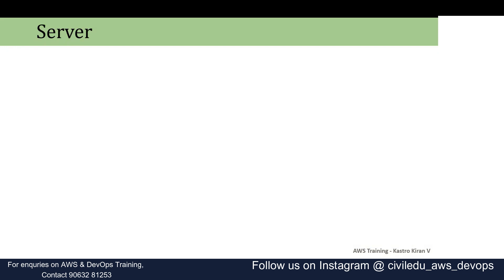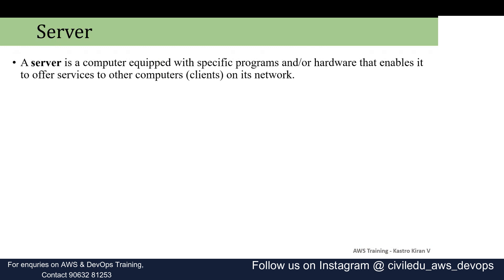Before understanding EC2, it's important to understand the concept of a server. A server is basically a computer equipped with specific programs or hardware components. If you want to work with an operating system, you need a server for that. Servers are available on two sides: one is a client server, connected to the network, and the other is a worker server, connected to the worker environment. We can also call these client nodes and worker nodes.